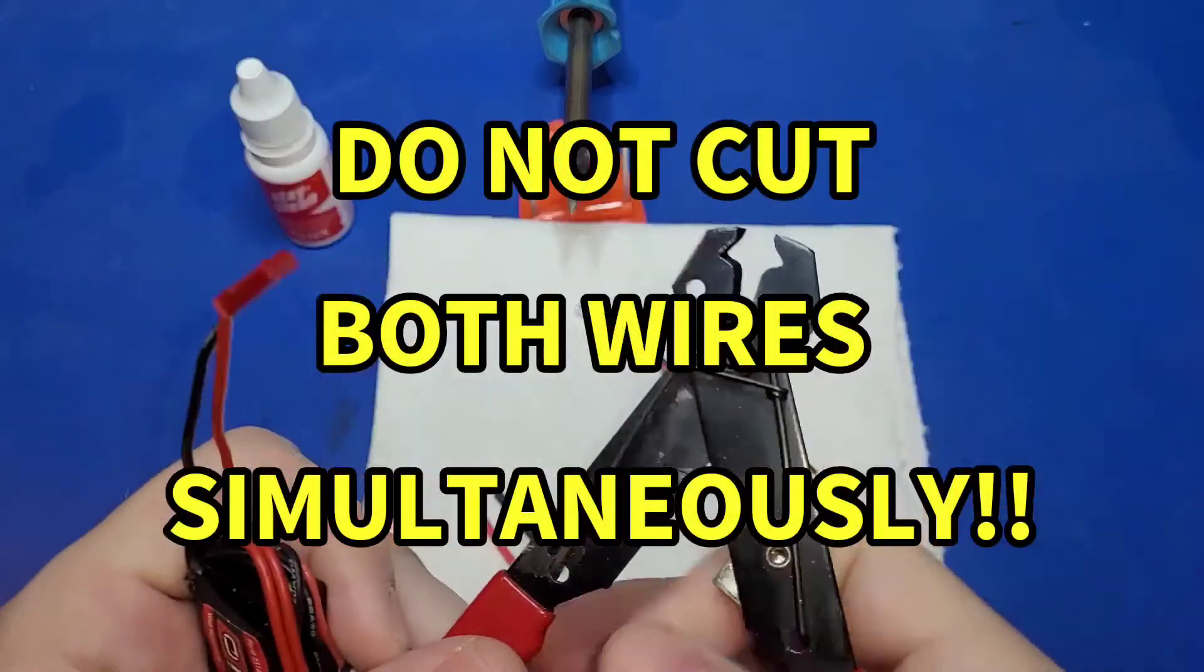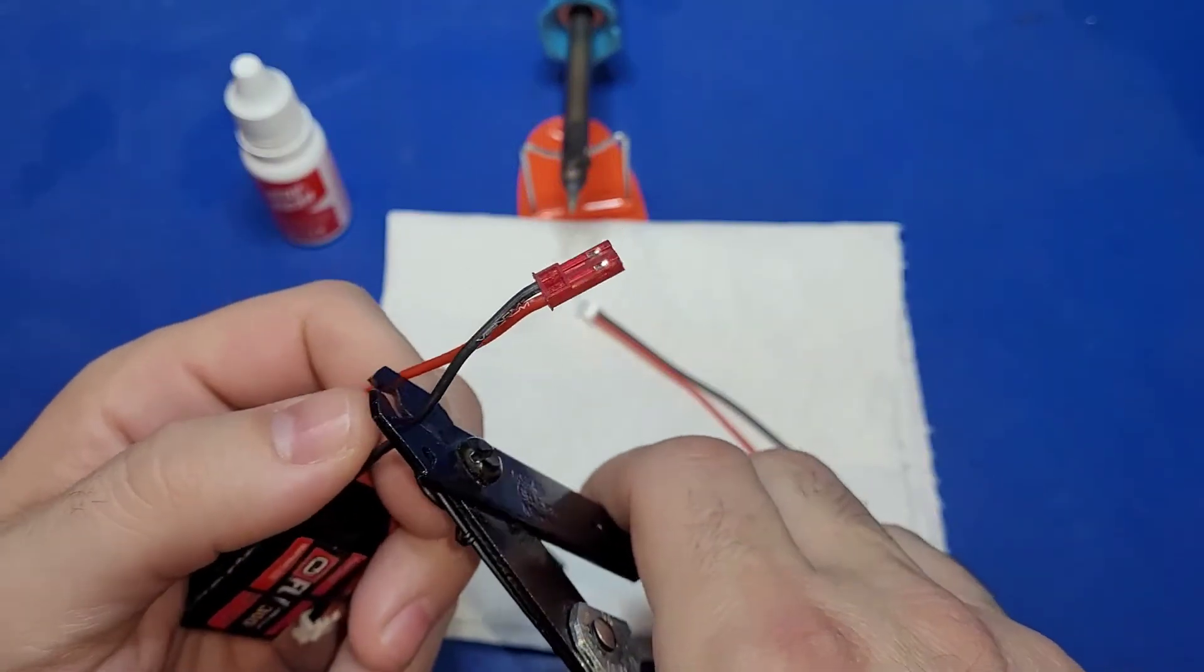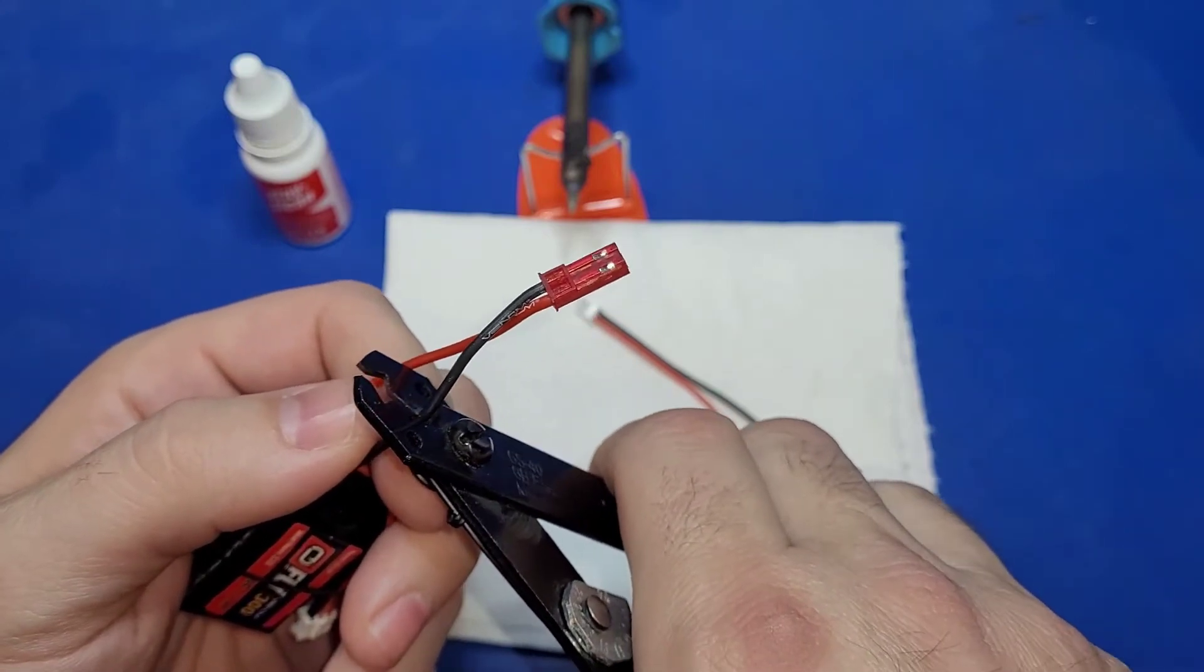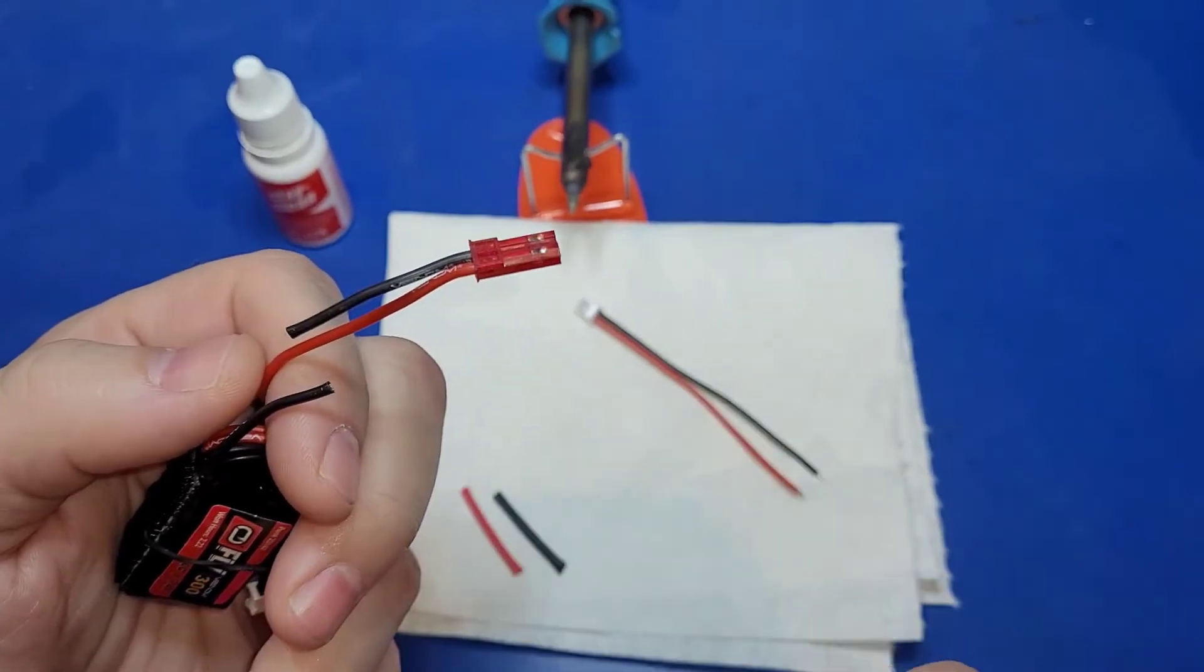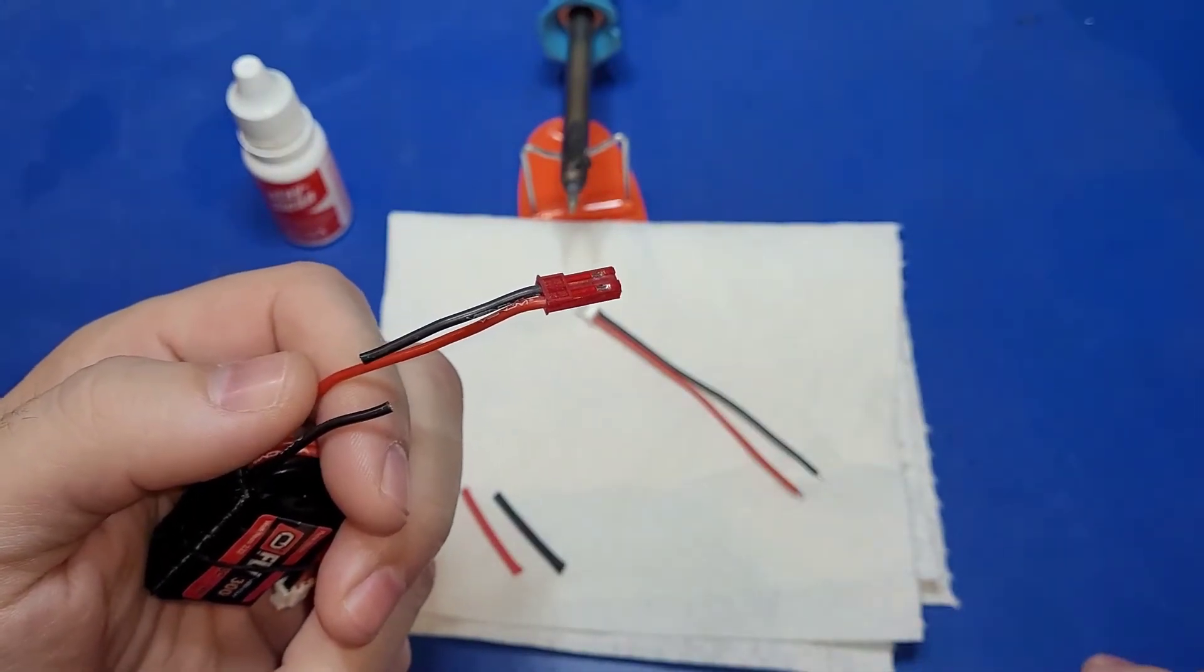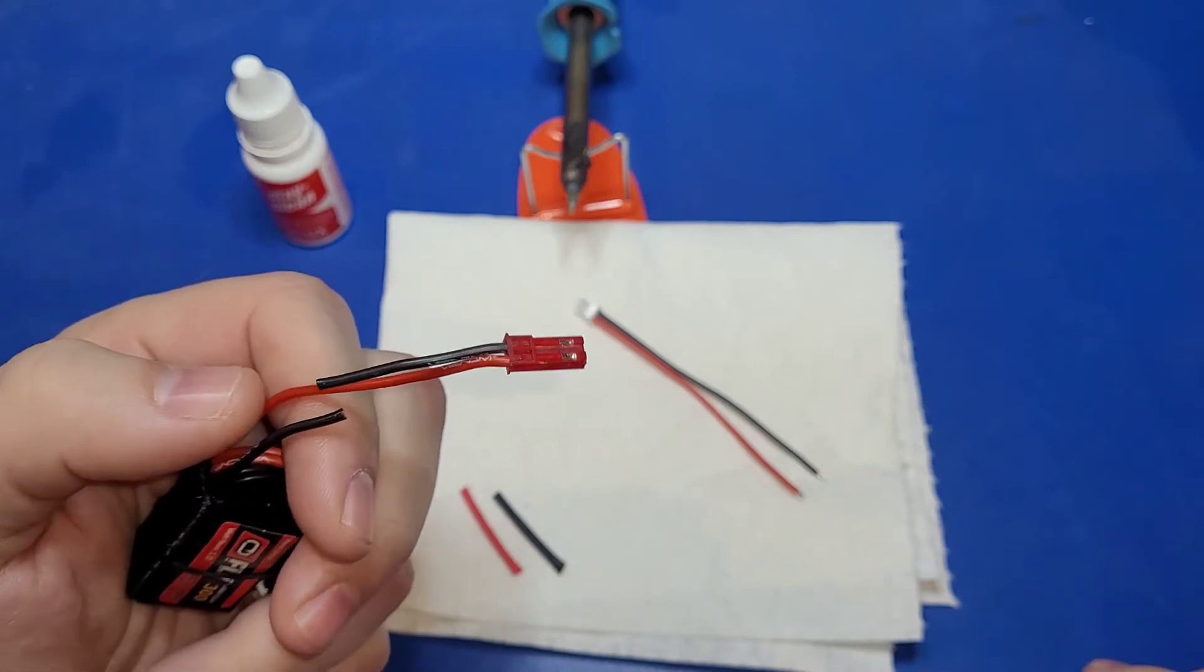Take your wire strippers. And I usually just cut about in the middle. One wire at a time. Do not cut both wires and strip both wires at the same time. Because if they touch, you will have a bad day.